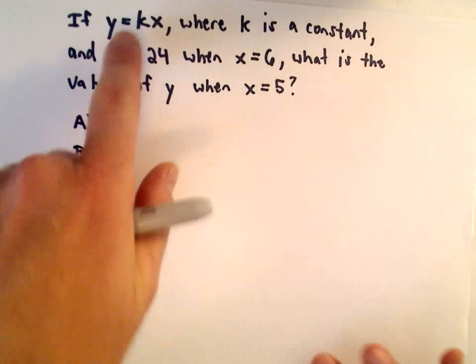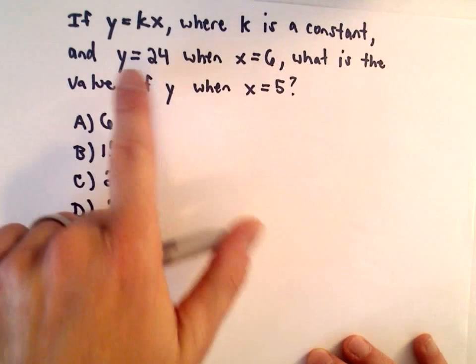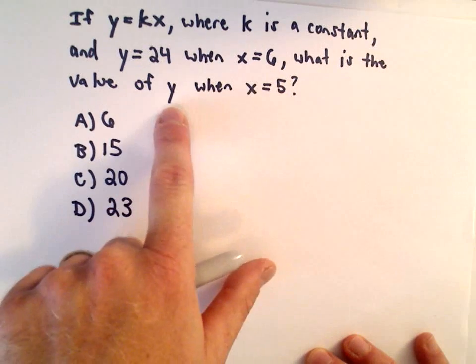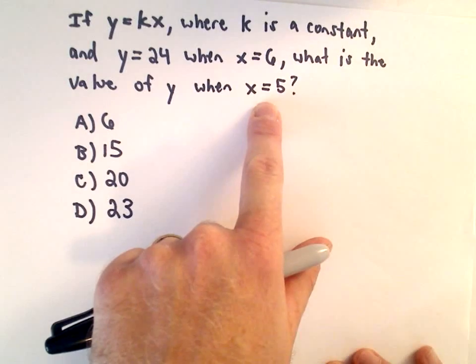Okay, in this question it says if y equals kx where k is a constant and y equals 24 when x equals 6. We want to know what's the value of y when x equals 5?